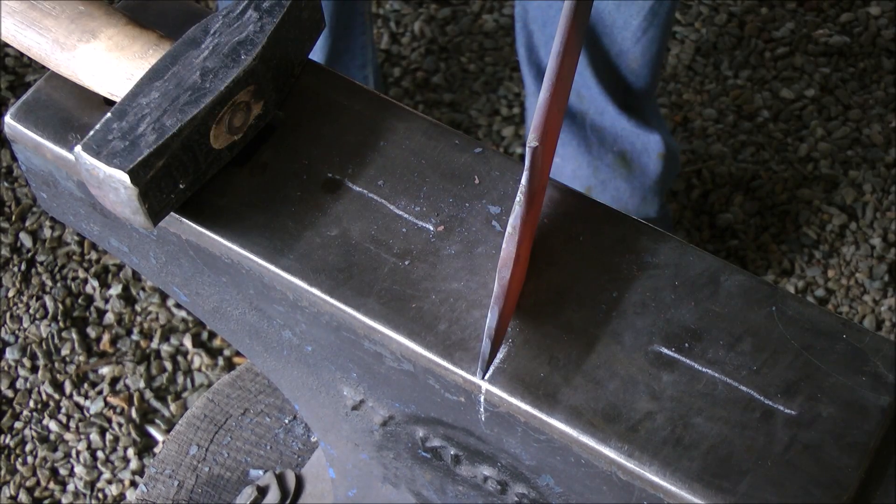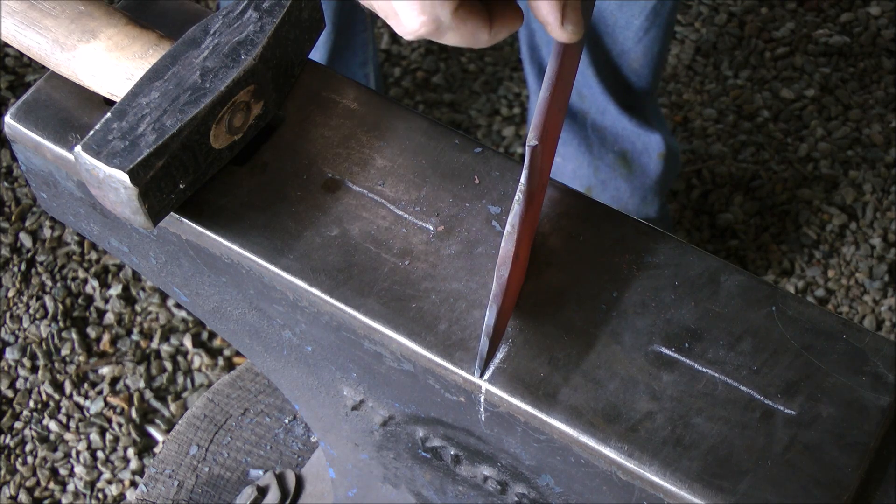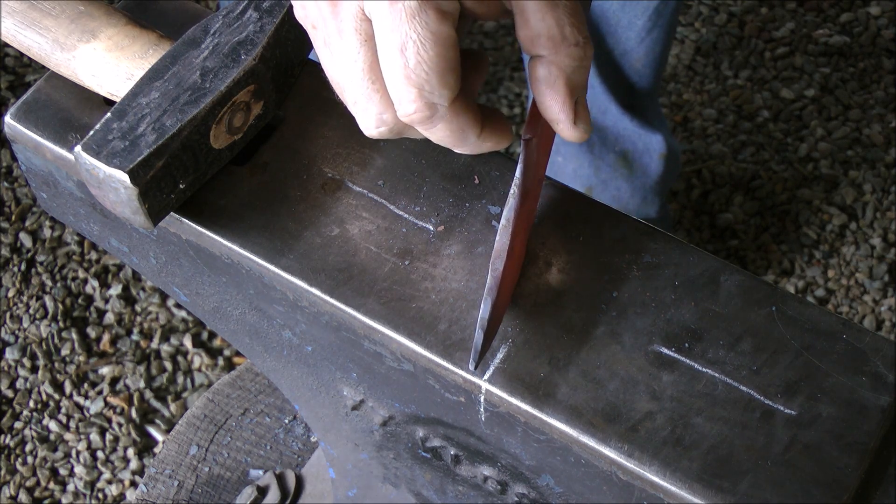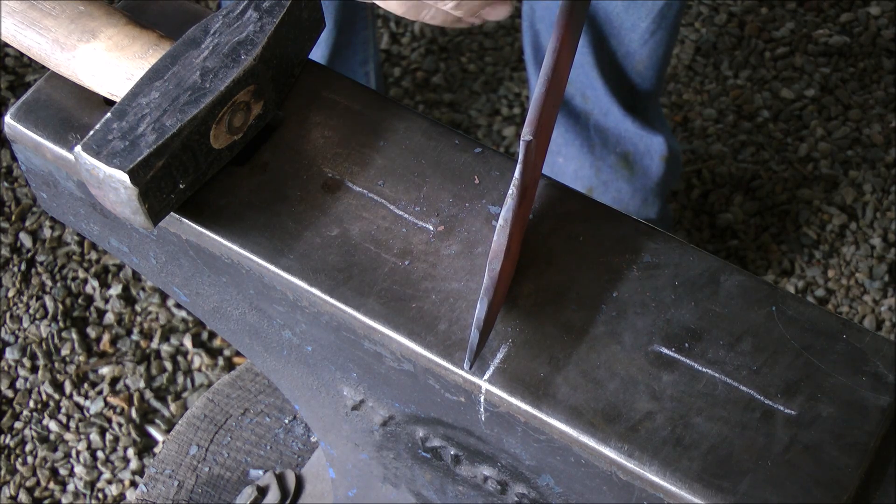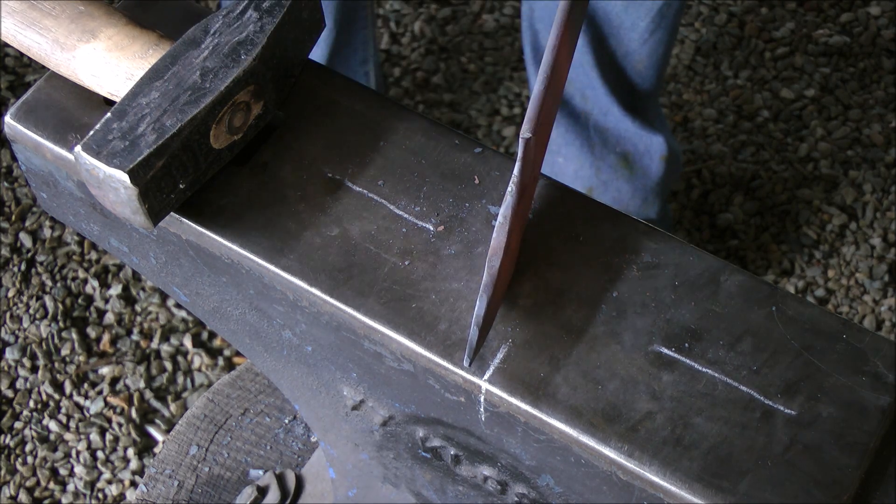Basically, my rule is, if I'm starting with 6mm thick stock bar, I want to draw out my cutting edge to a third of that thickness. I'm going to pinch it down to about 2mm.